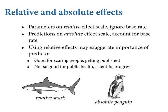Parameters are on a relative effect scale because they're in the linear model space, independent of the other terms. Those beta coefficients are relative effects that ignore things like the intercept and where it's located. Because of ceiling and floor effects, the absolute effect on the prediction scale depends on both the intercept and the slope. There's a distinction between relative shark and absolute penguin — the penguin's better.